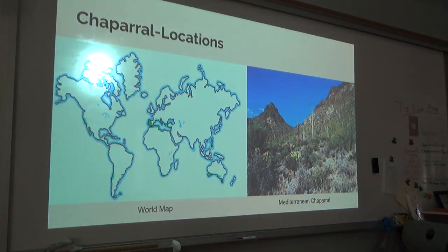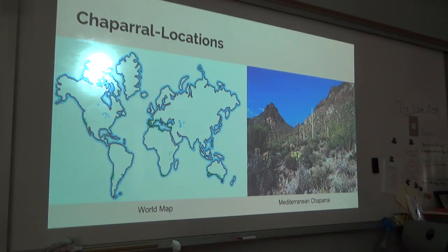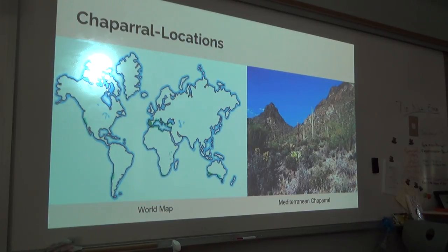The chaparral biome can be found throughout most of California, the southern tip of Africa, southwestern Australia, central Chile, the Mediterranean basin, and throughout Spain and Portugal. Chaparral environments tend to be on the western side of most continents, usually near the coastline, found 30 to 40 degrees above or below the equator. They are created when cool water meets a dry, warm landmass.